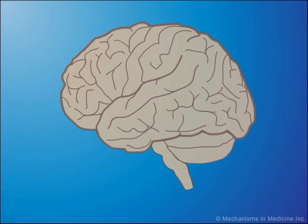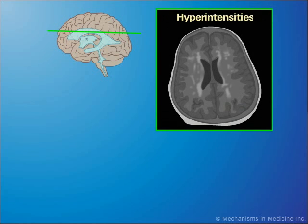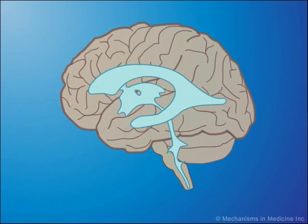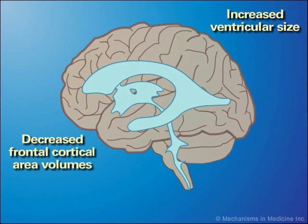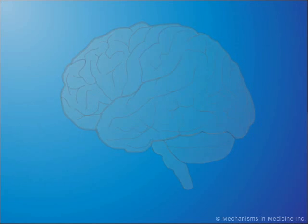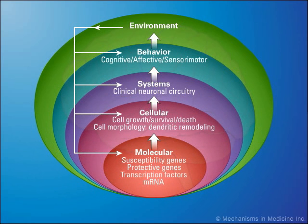Several morphometric differences have been observed in the brains of bipolar disorder patients relative to healthy subjects. White matter hyperintensities and reduction in gray matter volume identified with MRI have been described in patients with BPD. Increased ventricular size and decreased frontal cortical area volumes may also be observed in BPD patients. The pathophysiology of bipolar disorder encompasses environmental, behavioral, neuronal, cellular, and molecular levels.